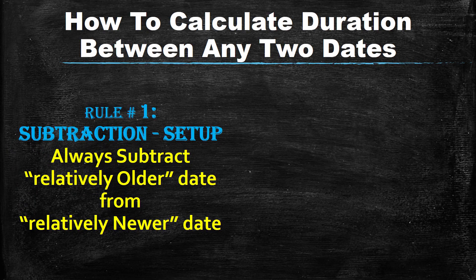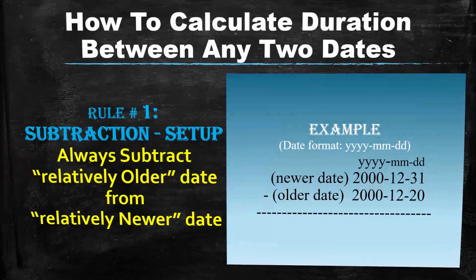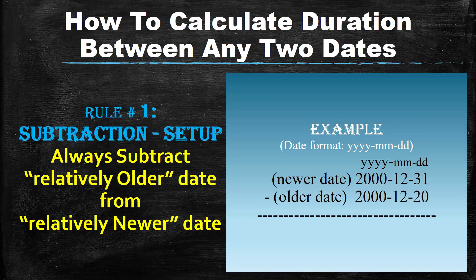The first rule is you have to always subtract the relatively older date from the relatively newer date. That's how the subtraction should be set up. For example, given 20th December 2000 and 31st December 2000, because 31st December 2000 is the newer date, you keep it above and 20th December 2000 below.